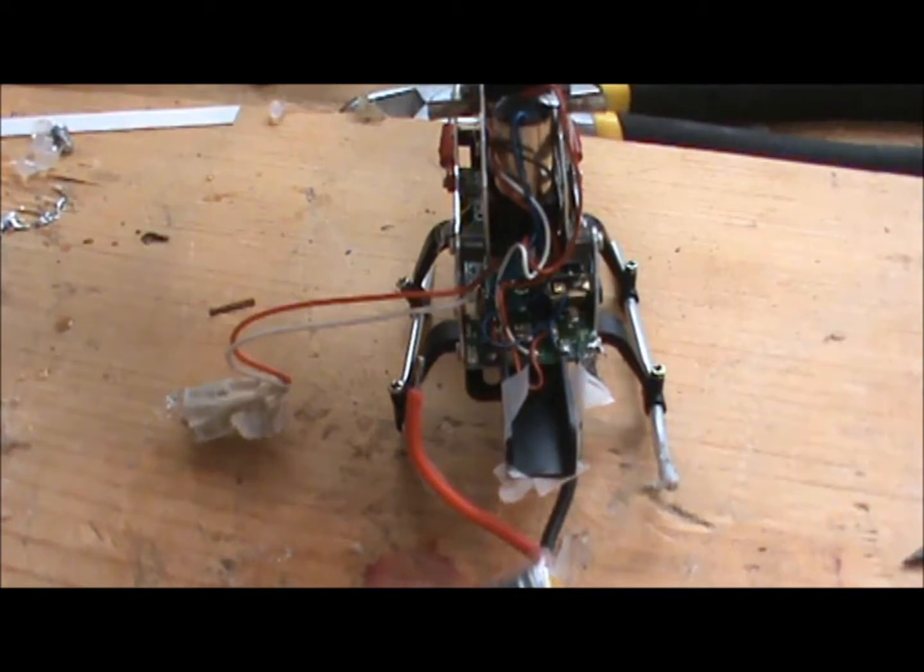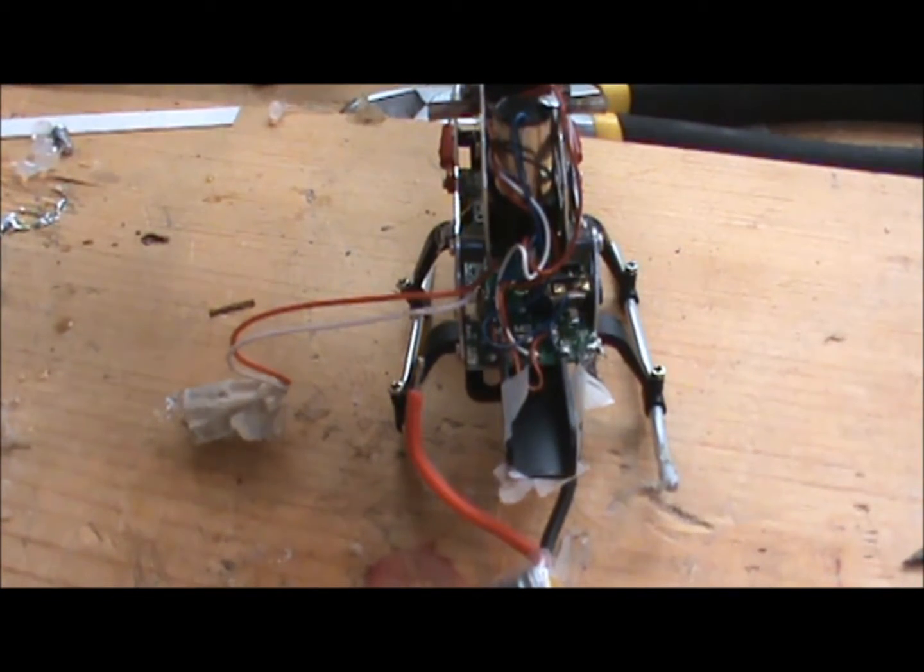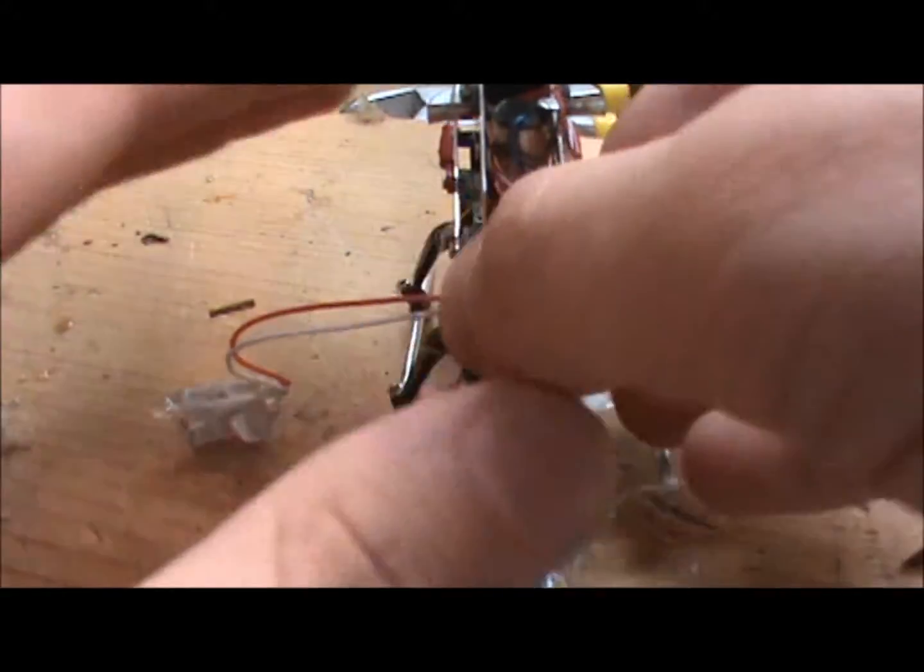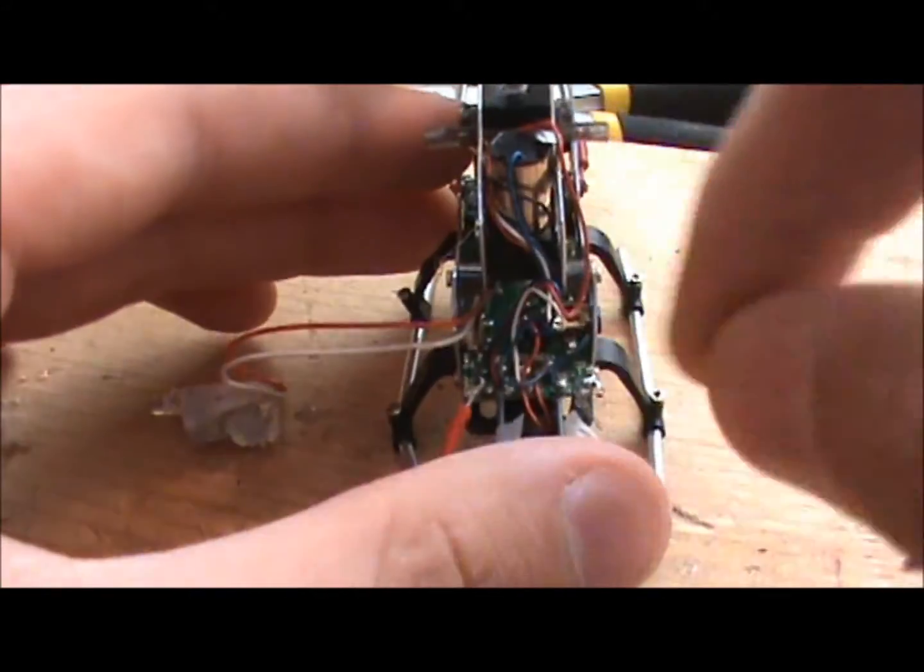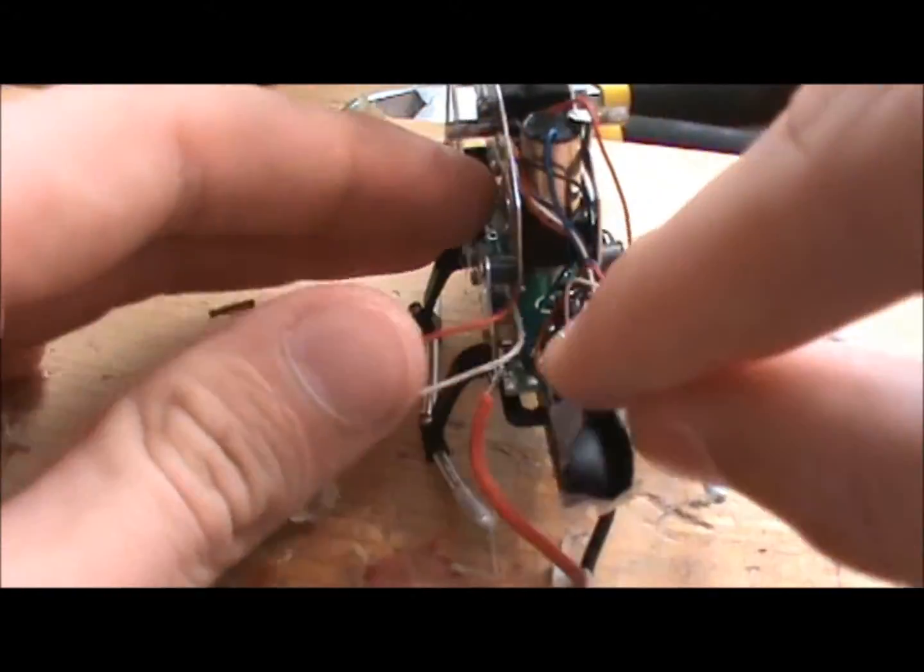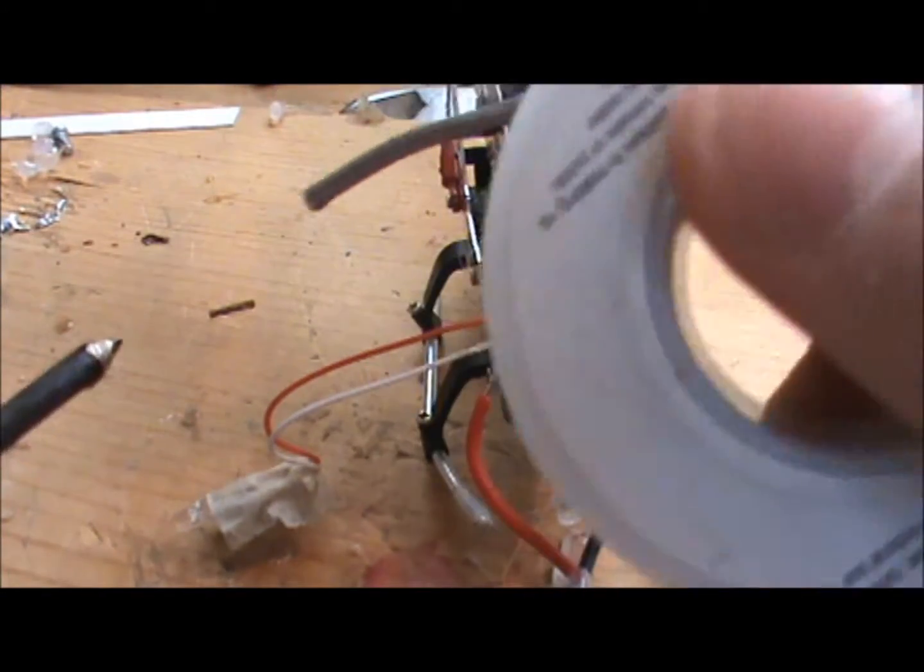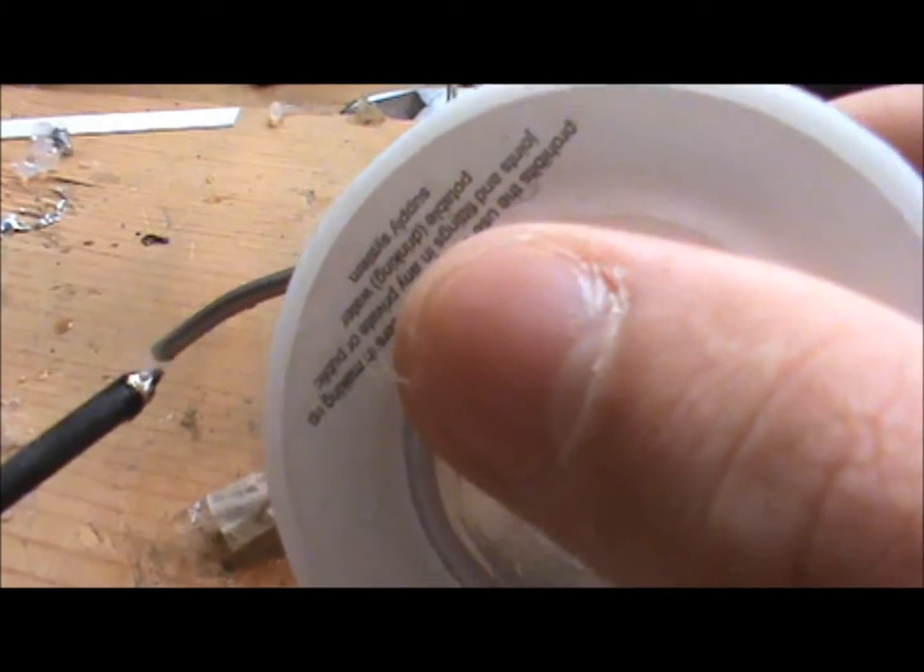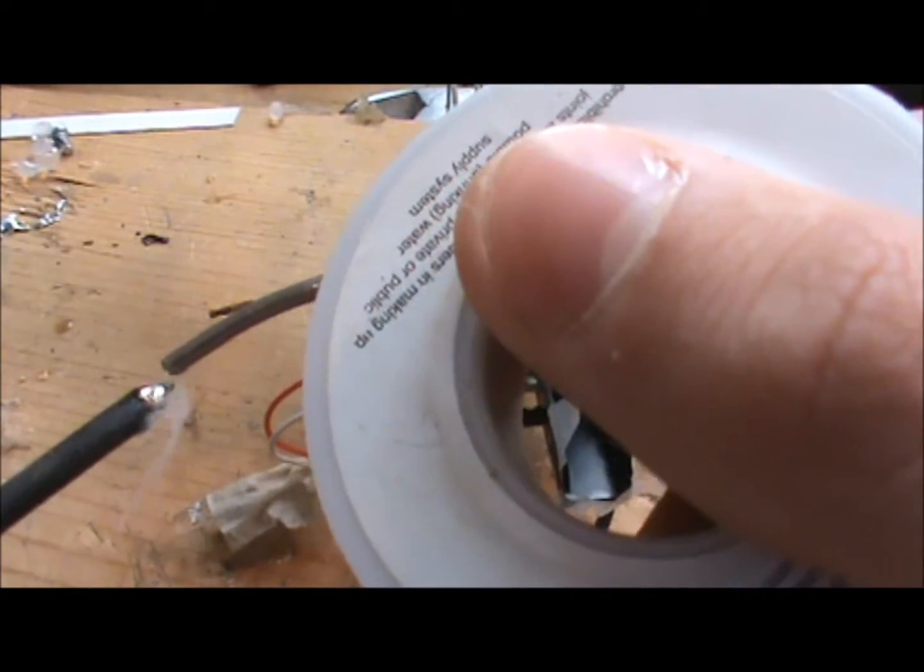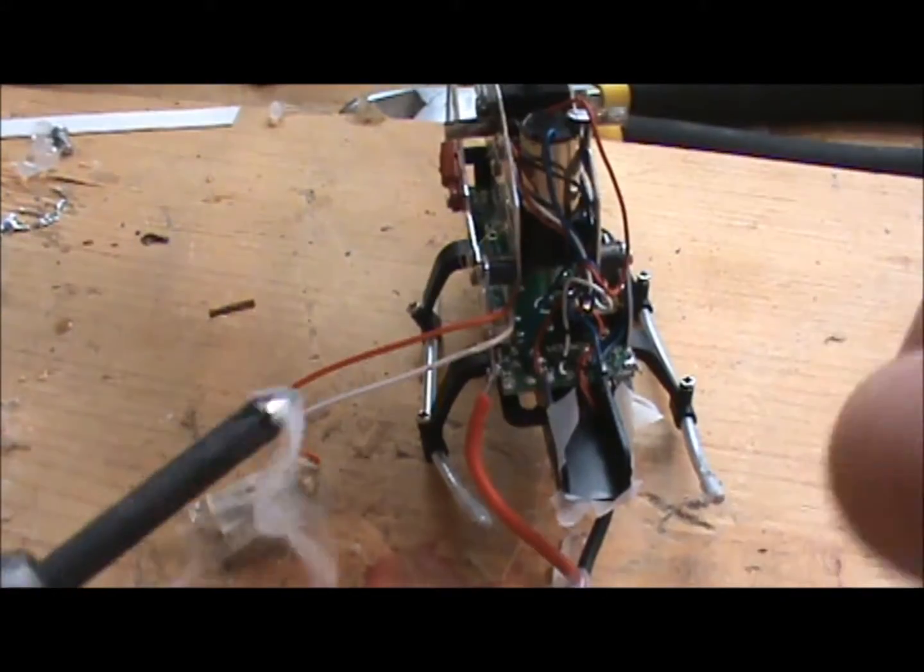Okay so you get your soldering iron and when you solder battery connections you still don't, I mean you never want to use a lot of solder but with battery connections try to use as little as possible. The more solder you use the less battery power you will get out of the battery.